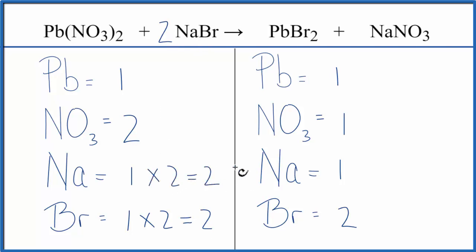So now we have 2 sodiums. We might as well just fix the sodiums. We could put a 2 as our coefficient in front of the sodium nitrate. So now we have 1 times 2, that gives us 2 sodiums, and then 1 nitrate times the 2, that gives us 2 nitrates.